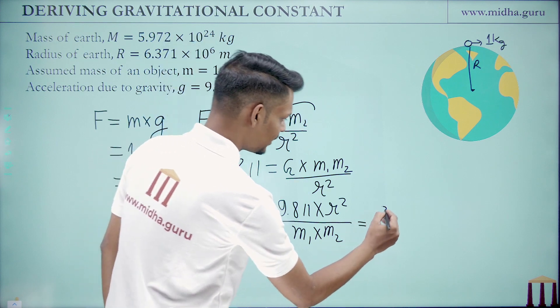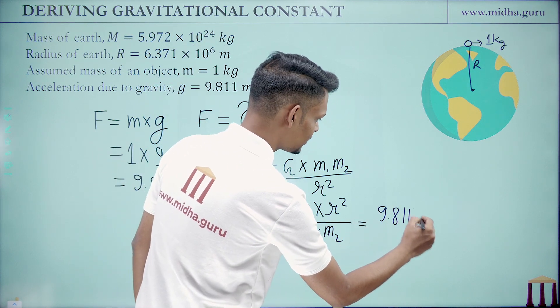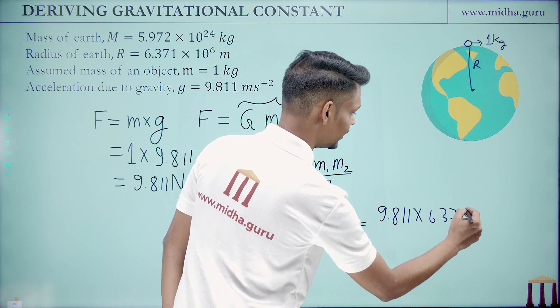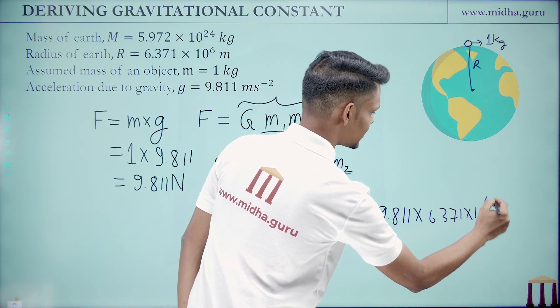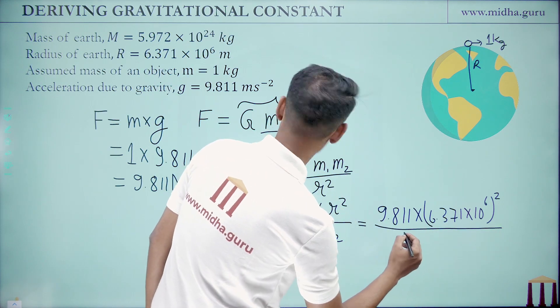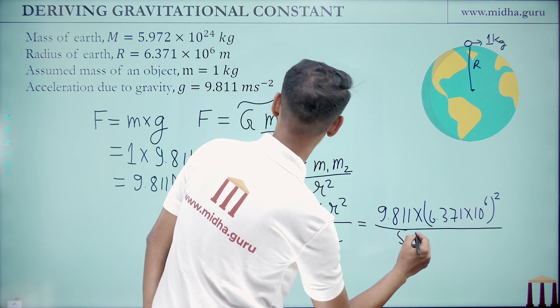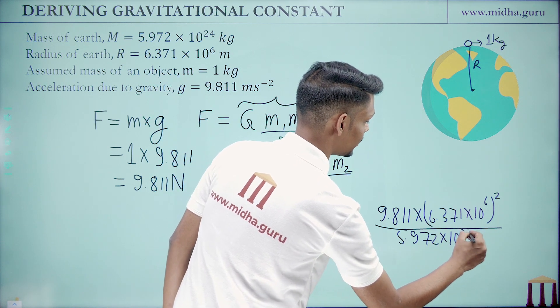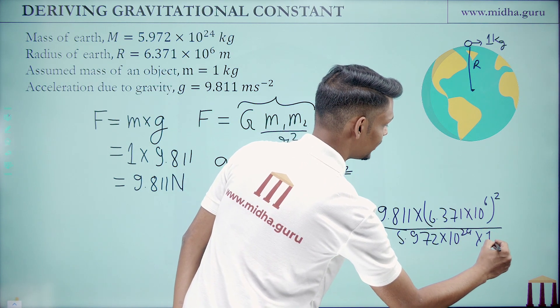So this is nothing but 9.811 times 6.371 times 10 to the power 6 whole squared divided by 5.972 times 10 to the power 24 times 1 kg.